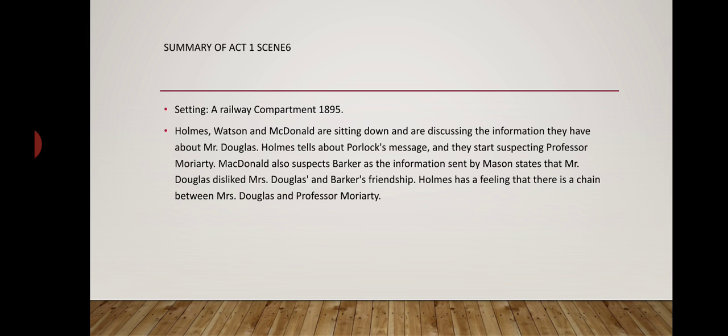They are sitting in a railway compartment currently, because MacDonald is bringing them to Hermitage Valley to investigate. They're going over the information sent by Mason, who is also the detective we talked about in Scene 5. They are suspecting Barker and Mrs. Douglas of being behind the murder, along with Professor Moriarty, because Mrs. Douglas and Barker had a friendship which Mr. Douglas was jealous about. So they're discussing the message, suspecting people, and making their theories based on what information they have and what they might find.